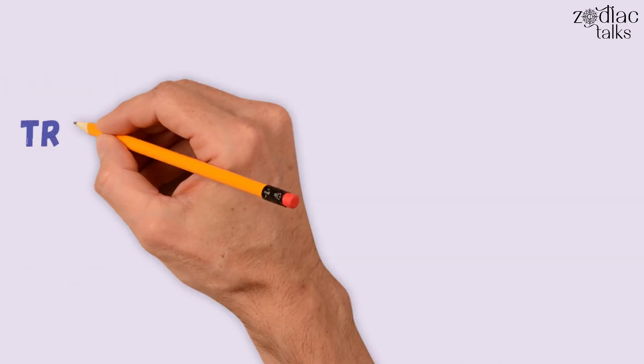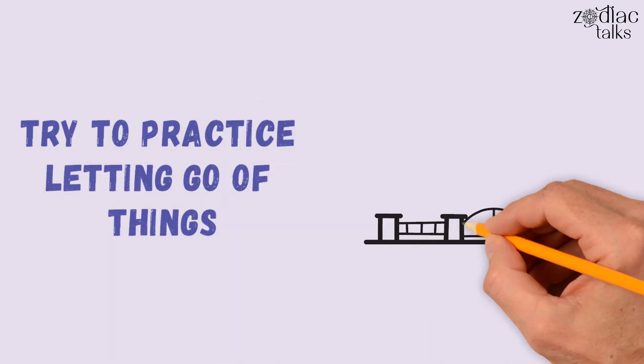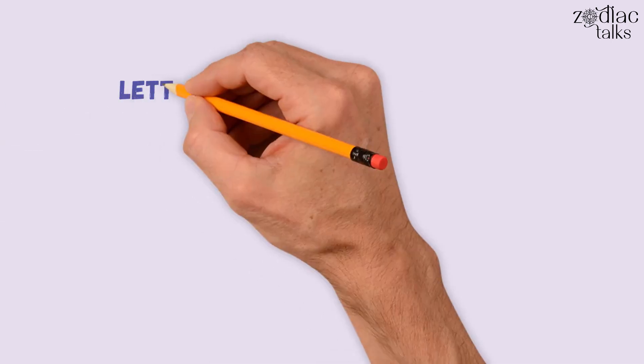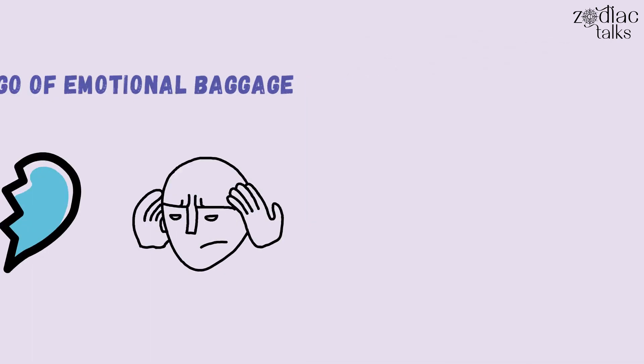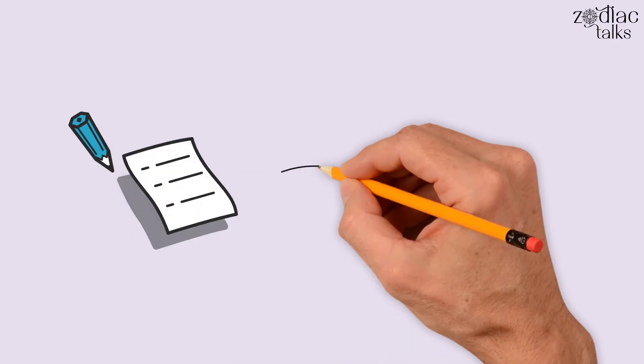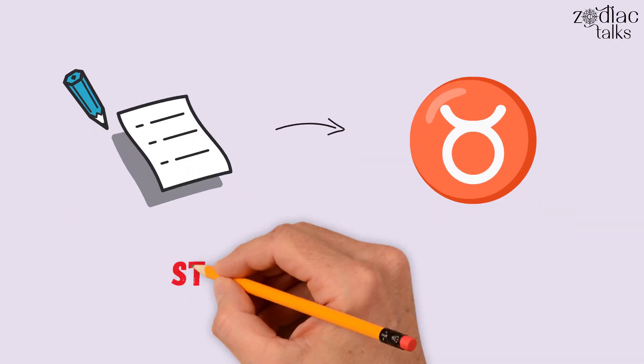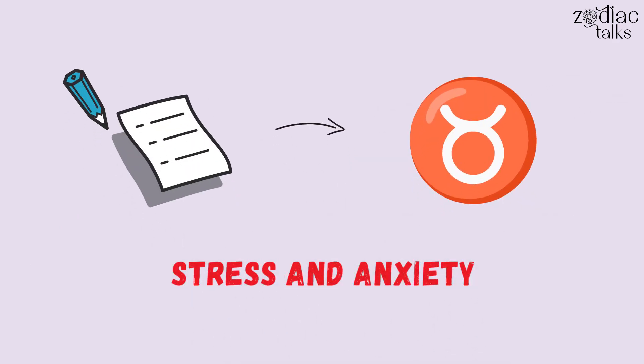So try to practice letting go of things regularly, like decluttering your home and office space, letting go of emotional baggage like hurt, resentment, and anger, to feel light physically and emotionally. Here are a few tips for Taurians to cope with stress and anxiety related to change and material instability.